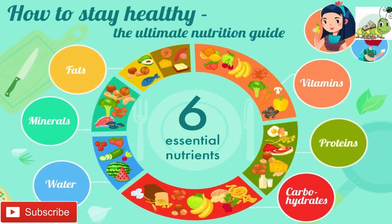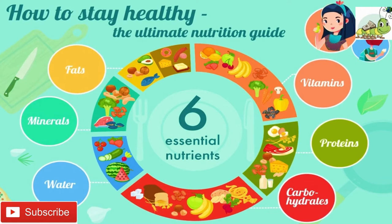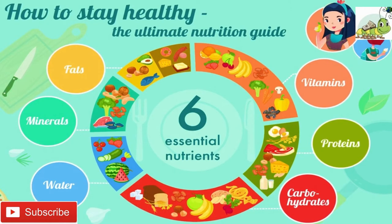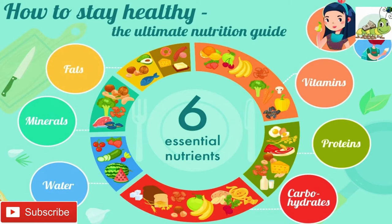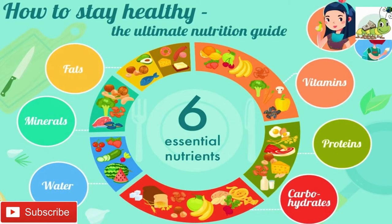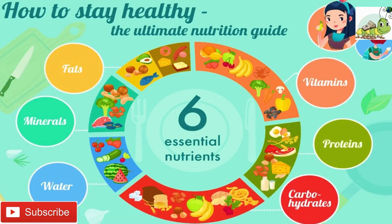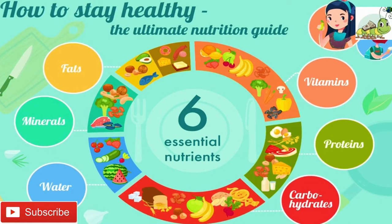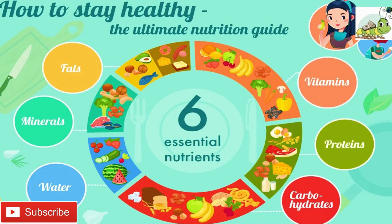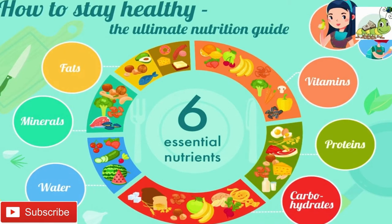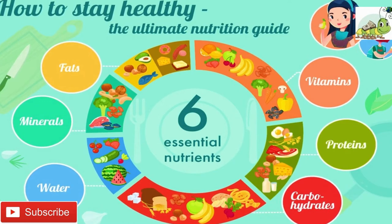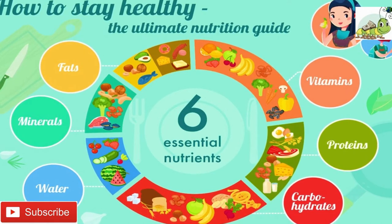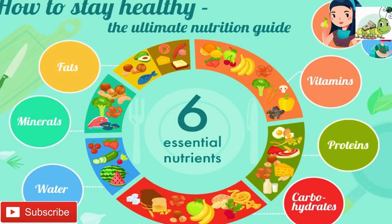Food also provides materials for excretion of waste products and for all other activities of the organism, as well as materials from which all the structural and catalytic components of the living cell can be assembled. Living organisms differ in the particular substances they require as food, in the manner in which they synthesize food substances or obtain them from the environment, and in the functions these substances carry out in their cells. Nevertheless, general patterns can be discerned in the nutritional process throughout the living world.